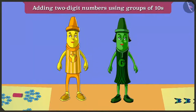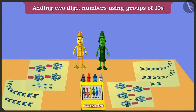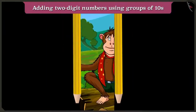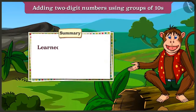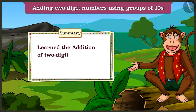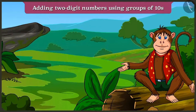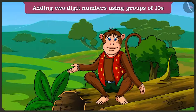Greeny, looks like somebody is coming. Let's go. Okay then, today from the conversation between Yellow and Greeny, we learned adding two-digit numbers using groups of tens — adding the numbers in the ones place first, then the tens. In the next video, we will learn with the help of examples the addition of two-digit numbers.